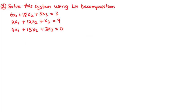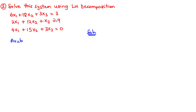Let's take the second example. We are going to solve this system using LU decomposition. Like we did in the first example, the first thing we need to do is to represent this system in the form AX equals B, where A represents the coefficient matrix, X contains the unknown variables X1, X2, and X3, and B are the values on the right-hand side of each of the equations.